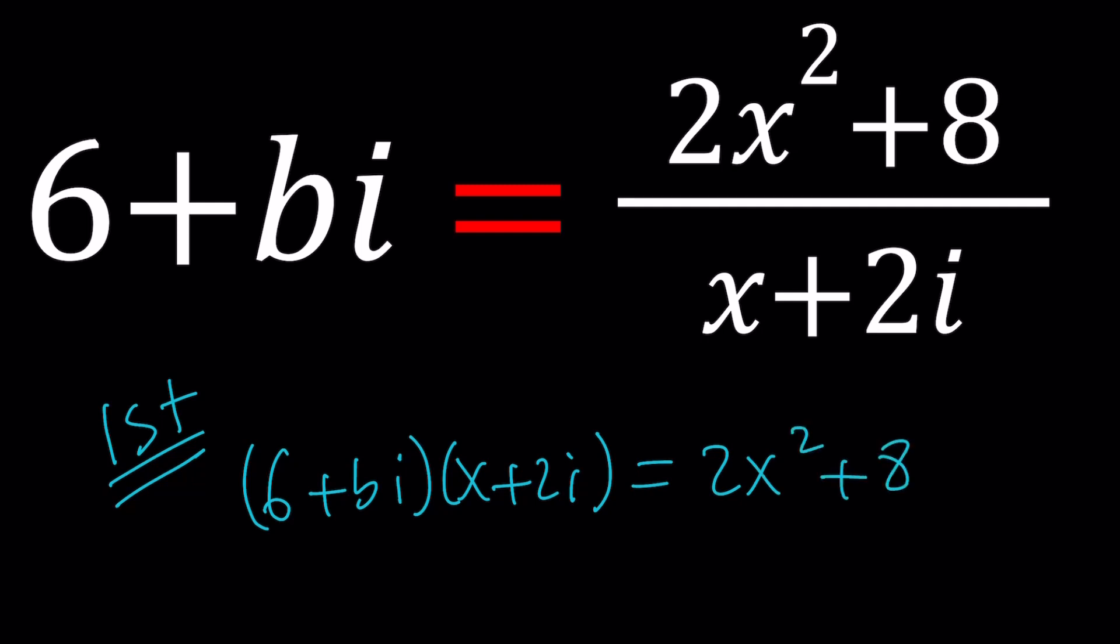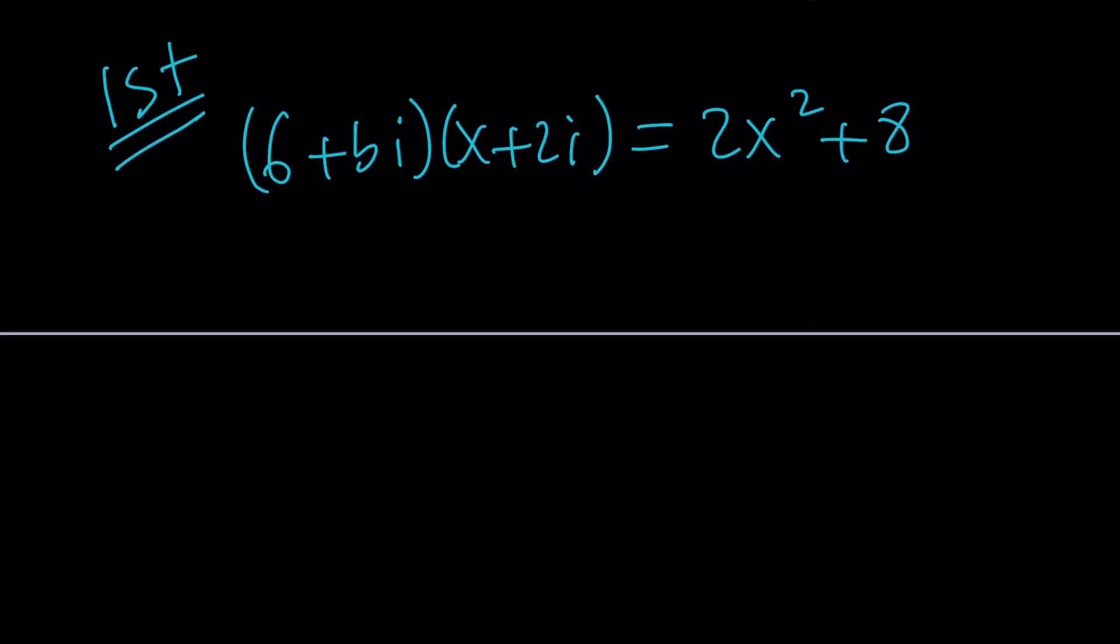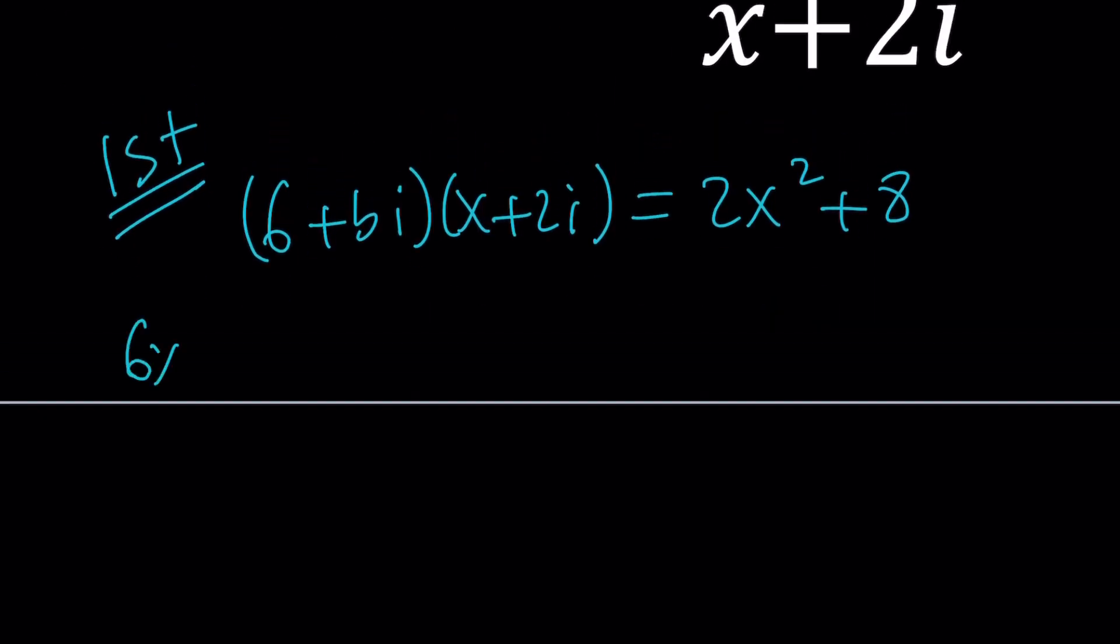Remember, this is an alternative to division. You can also solve this problem by dividing complex numbers. Now let's distribute. We're going to get 6x plus 12i plus bxi plus 2b i squared. i squared is negative 1, so this is going to give us minus 2b.